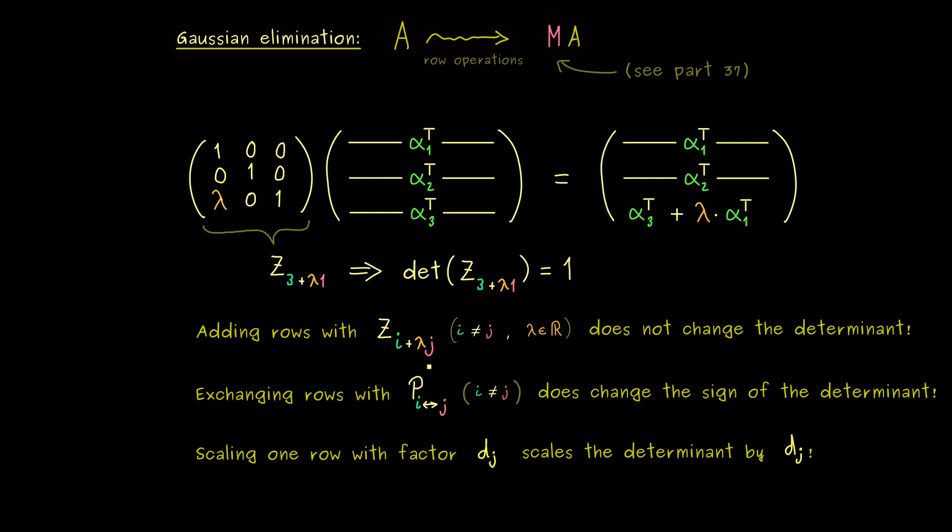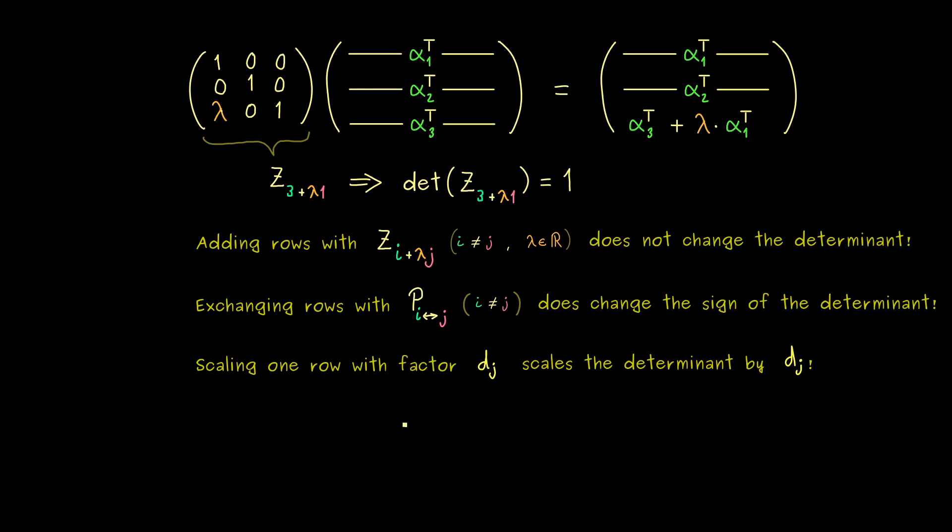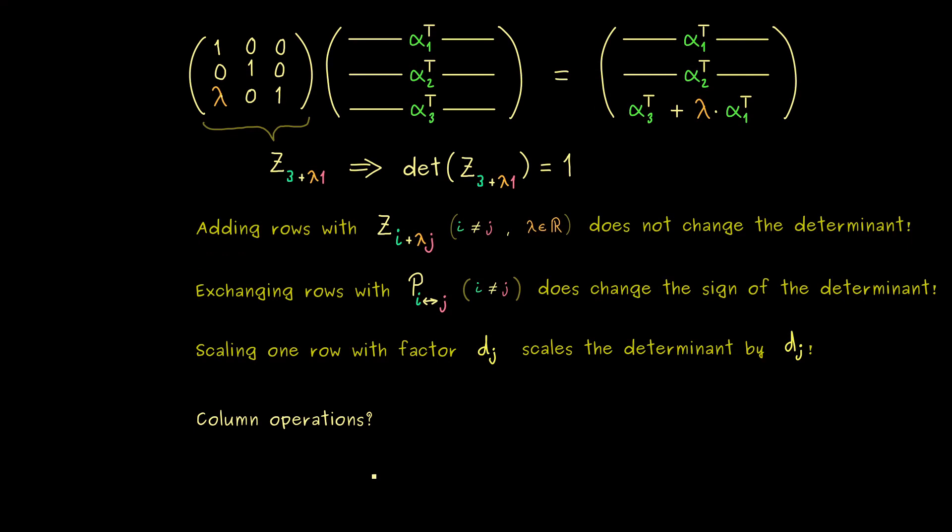Ok, and with that I would say you have all the rules how you can use the Gaussian elimination to calculate a determinant of a matrix. And now at this point you might ask,